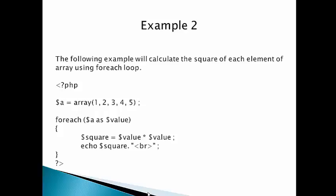For the second forEach loop example, we use the same syntax — foreach ($a as $value). Here, we calculate the square: $square is equal to $value multiplied by $value. The value will change in each iteration and the square will be calculated accordingly.